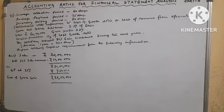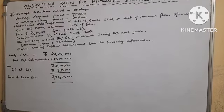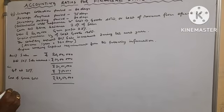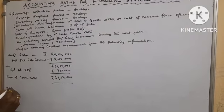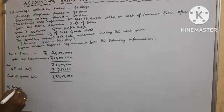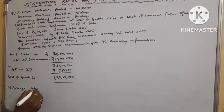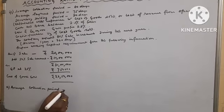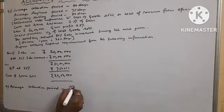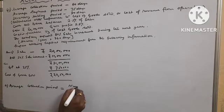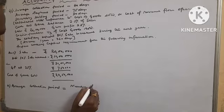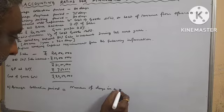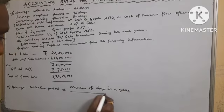Now we have to find out debtors. Before finding out debtors, average collection period we know equals to number of days in a year divided by debtors turnover.